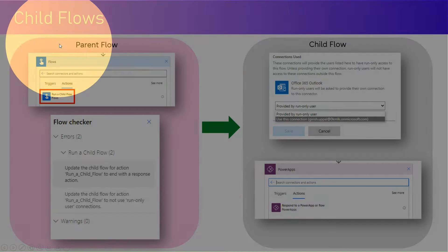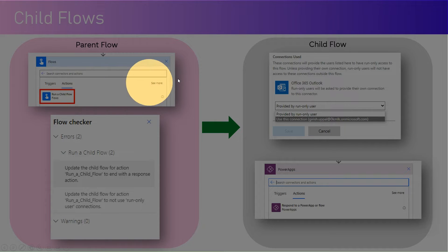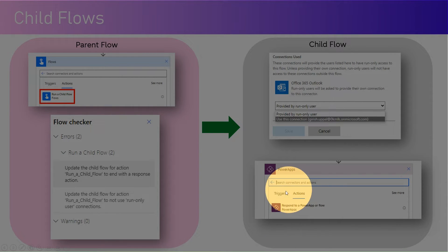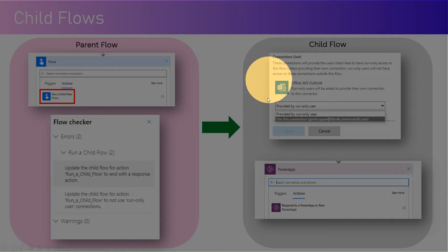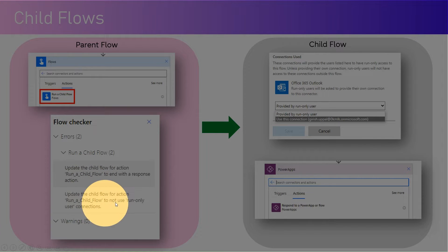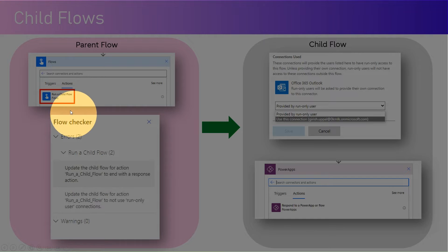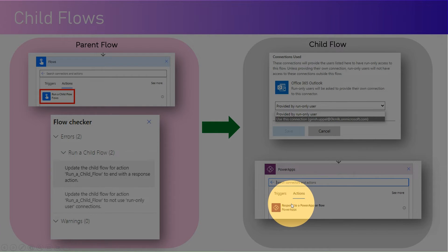If you see in the screenshot, on the left-hand side there is a parent flow and on the right-hand side there is a child flow. In the parent flow you write your own logic and then call the child flow using 'Run a child flow'. Within the child flow, when you execute the set of actions you need to revert back to the parent by using an action called 'Respond to a Power App or flow'. You may encounter an error if this return action is not defined.